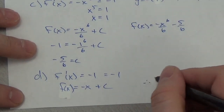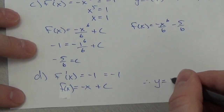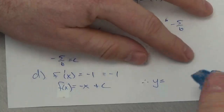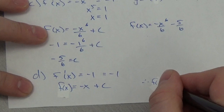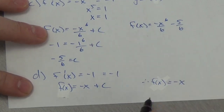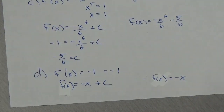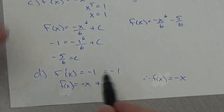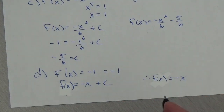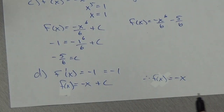Therefore, F of x is simply equal to negative x. When you take the derivative of that, you get negative one — the slope we're looking for. In this case, because the derivative is a constant, I know I've got a linear function. And if I've been given the equation of the tangent, that is the function I'm looking at. It's as simple as that. I hope that helps.